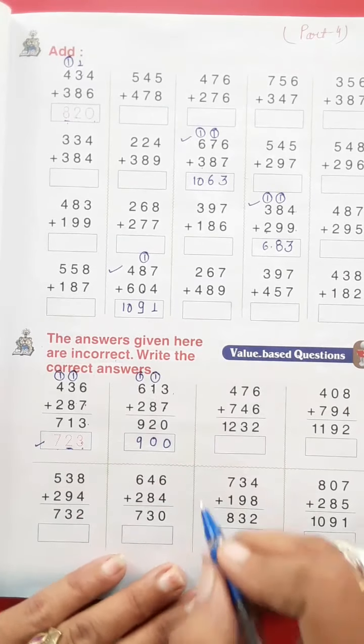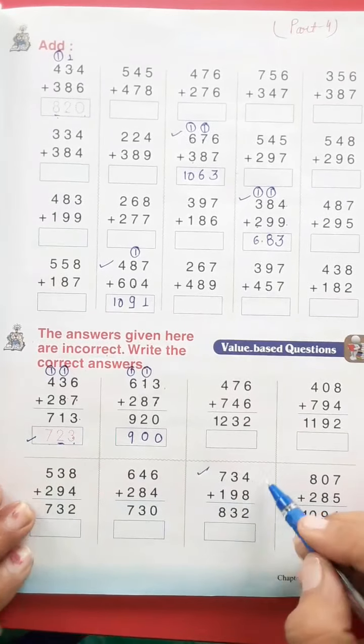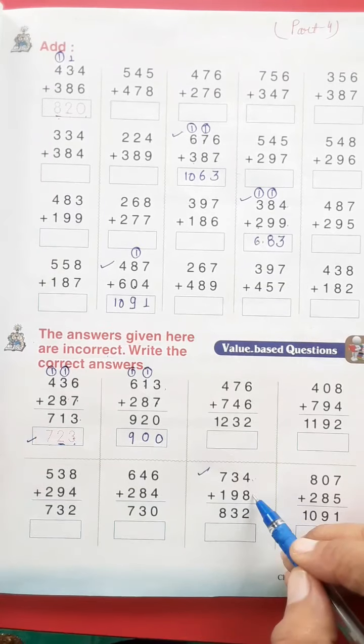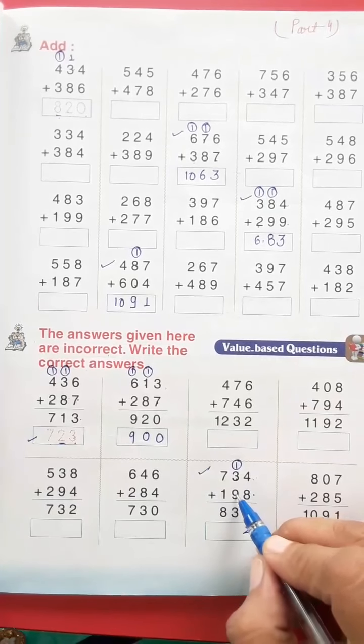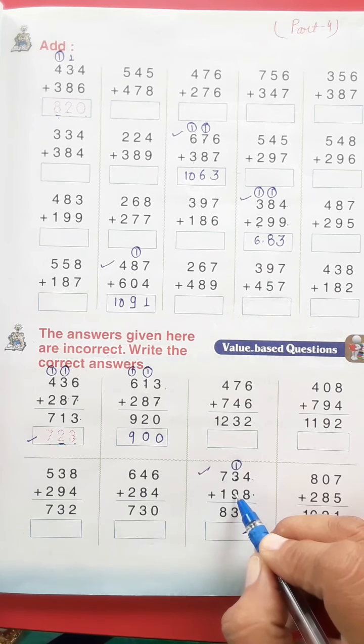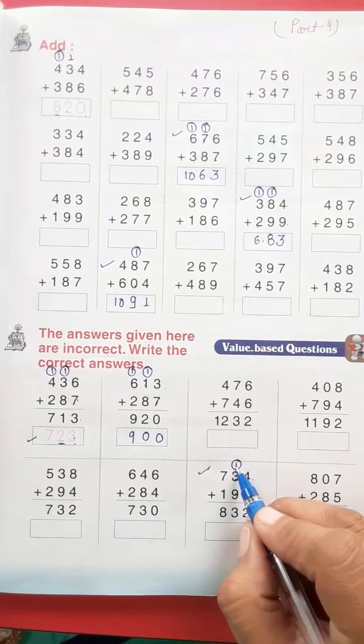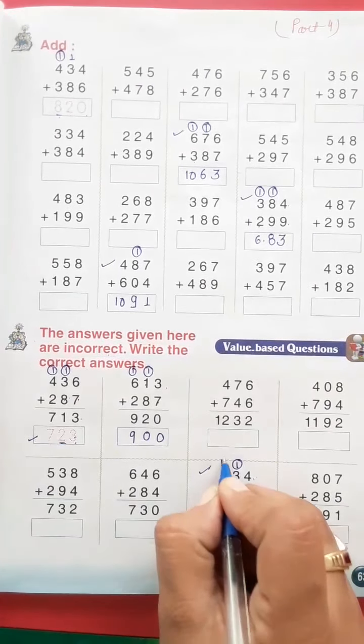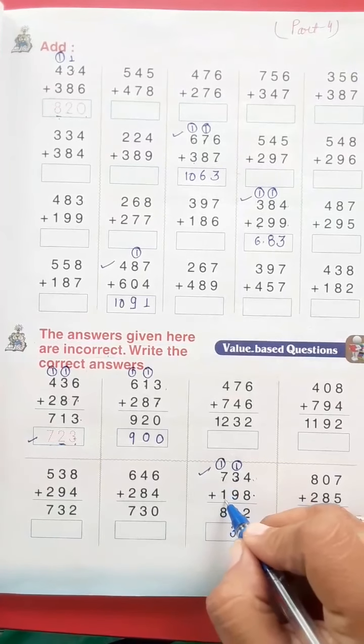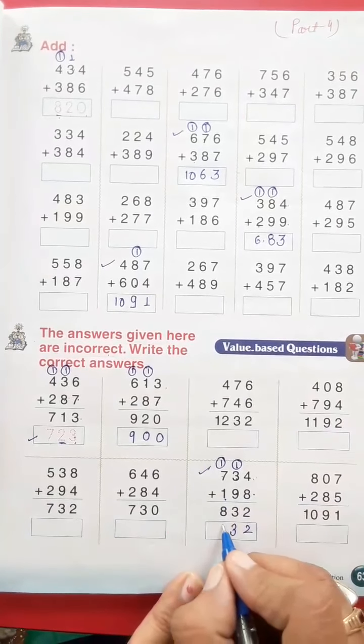Ab ek aur dekhte hain, yeh wala sum. Four and eight is 12, 2 carry 1. Three and nine is 12, plus 1 is 13, 3 carry 1. Seven and one is eight, plus 1 is nine. So it's 932. Rest you have to do in your book.